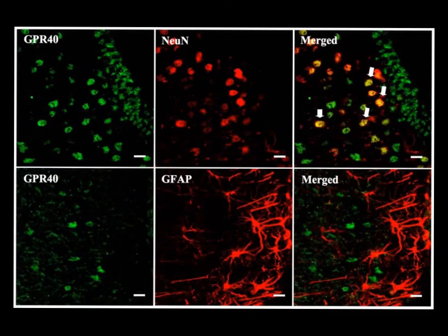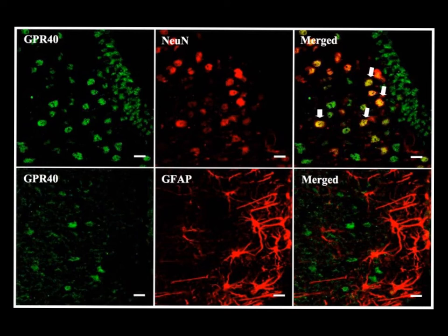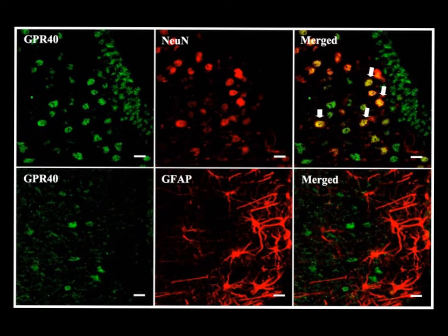Here's an example result. Let's say you want to identify G-protein coupled receptor 40 in a neuronal cell culture. You use the antibody against GPR40 and incubate with a green fluorescent secondary antibody, and you end up with an image like this. But if you want to know whether this receptor is expressed in neurons or astrocytes, you use a second antibody against a neuronal-specific protein — NeuN, expressed in neuronal nuclei — or against GFAP, an intermediate filament protein expressed in astrocytes.